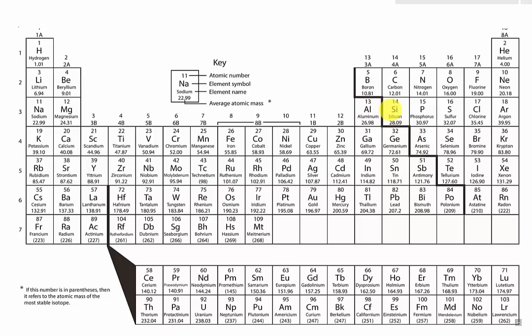In this lesson, we are going to learn how to use the periodic table to name monatomic ions, specifically the cation.